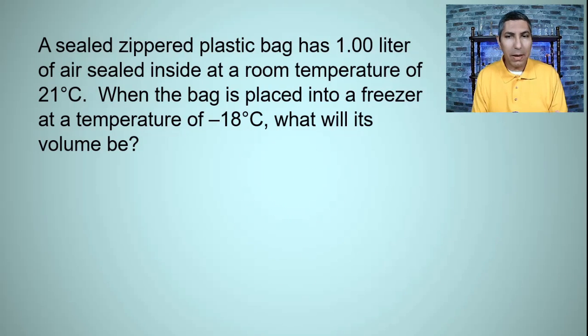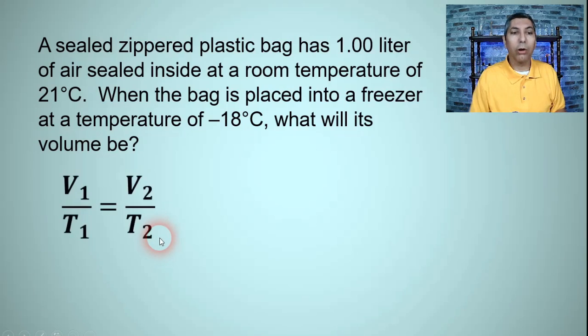So as we think about this problem, we have to ask ourselves which factors are changing? Is it pressure? Is it volume? Is it temperature? Well we can see first of all that temperature is changing. It goes from 21 degrees celsius to negative 18 degrees celsius. So that means that T is a factor here. We also can see that volume is changing because the bag goes from a volume of 1.00 liter to some other new volume that we're being asked to calculate. So V is also a factor. So T and V, well that sounds like Charles law. So since it's Charles law we can just plug and chug.